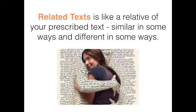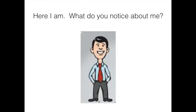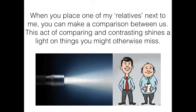Some students struggle initially with the concept of what a related text is. I think of texts in the same way I think of people. I'm related to my mum, dad, brothers, sister, cousins, aunts and uncles. I'm like these people. We share a lot of things, but we are all intrinsically different. When I'm by myself, you may notice a few things about me. However, when you stand me side by side next to one of my relatives, you compare us and then you start to make connections between us. It's the same with related texts.